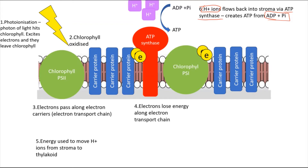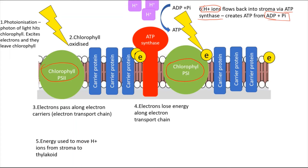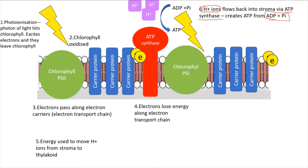There is another chlorophyll — we called the first one PS2 or photosystem two, and now we have chlorophyll PS1 or photosystem one. The same process happens: the photon of light hits the chlorophyll, excites the electrons, and they leave via the electron transport chain, again losing energy as they move through — the same process as occurred in chlorophyll PS2.